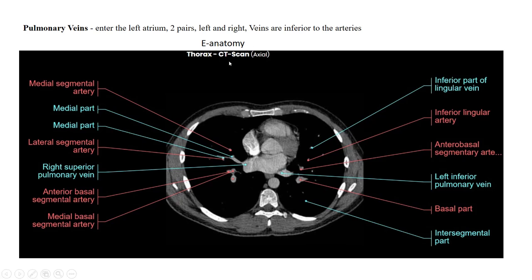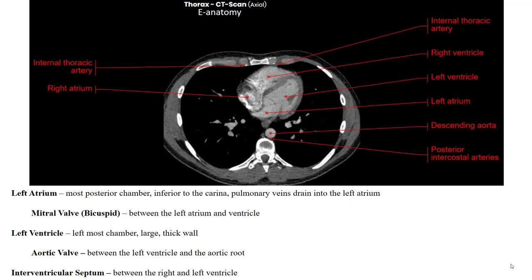This is again an image from e-anatomy, very similar to the image we started with when talking about the right atrium and how the SVC and IVC dump into it. Here we have the right atrium and right ventricle with the tricuspid valve between them, and the left atrium and left ventricle with the bicuspid valve between them. Again, the left ventricle has a very thick wall — that's how you identify that chamber. The pulmonary veins dump into the left atrium; the right and left superior and inferior pulmonary veins bring blood back to the heart into the left atrium. From there it goes through the mitral or bicuspid valve into the left ventricle, and then out through the aortic valve.